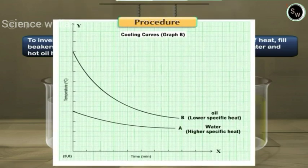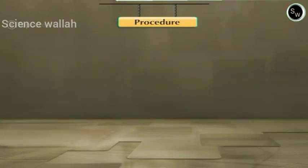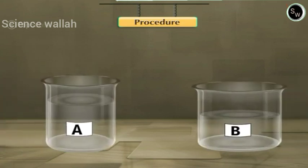To investigate the effect of surface area on the cooling rate, take same amount of hot water in two beakers of different sizes. It is found that cooling of the liquid is faster having larger surface area of exposure.